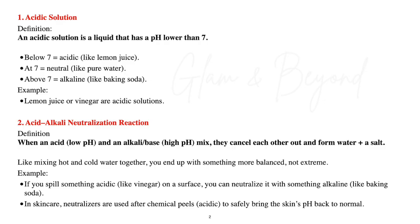Number two, acid-alkali neutralization reaction. When an acid with low pH and an alkali base with high pH mix, they cancel each other out and form water plus a salt. Like mixing hot and cold water together, you end up with something more balanced, not too extreme. For example, if you spill something acidic like vinegar on a surface, you can neutralize it with something alkaline like baking soda. In skincare, neutralizers are used after chemical peels to safely bring the skin's pH back to normal.